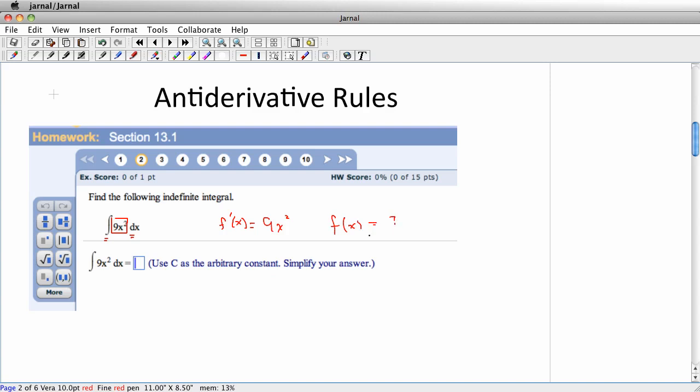Now, because we're comfortable with derivative rules, it's not too hard to figure these out, even if you just have to guess at them and check them. So, for example, I might decide that a good guess here would be x cubed. Why would that be a good guess?